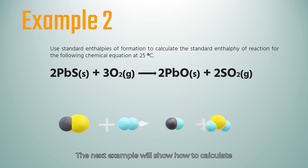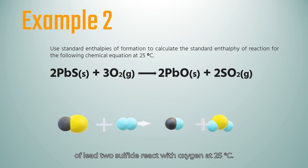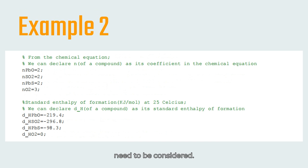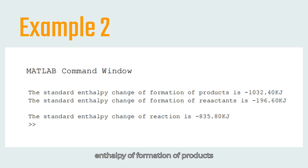The next example will show how to calculate the standard enthalpy change of reaction of lead 2 sulfide reacting with oxygen at 25 degrees Celsius. Almost the same with previous equation where the coefficient from the chemical equation needs to be considered. The standard enthalpy of formation for each compound can be found from any reference. After getting all the information, we can calculate the standard enthalpy of reaction by subtracting the total standard enthalpy of formation of products with the reactants. These are the results.